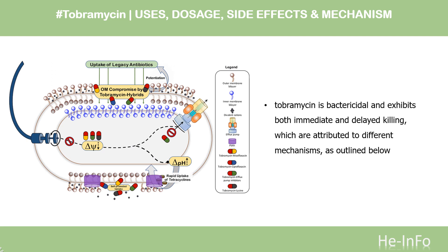Mechanism of Action: Tobramycin is a 4,6-disubstituted 2-deoxystreptamine (DOS) ring-containing aminoglycoside antibiotic with activity against various gram-negative and some gram-positive bacteria. The mechanism of action has not been unambiguously elucidated, and some insights rely on results using similar aminoglycosides. Like other aminoglycosides, tobramycin is bactericidal and exhibits both immediate and delayed killing, which are attributed to different mechanisms.